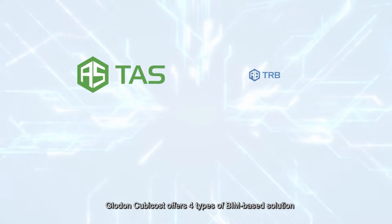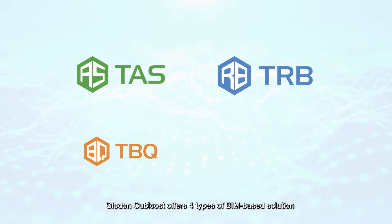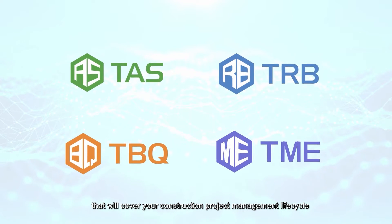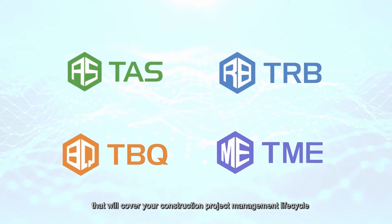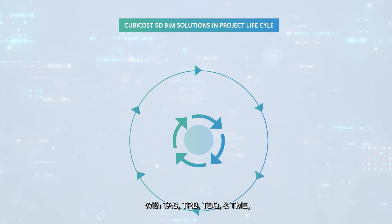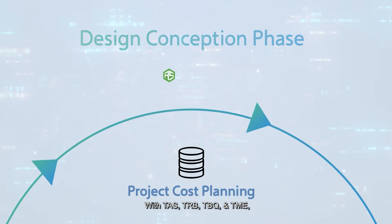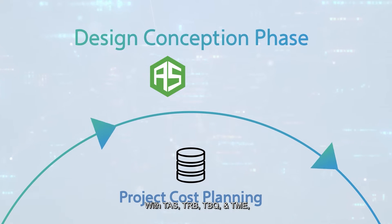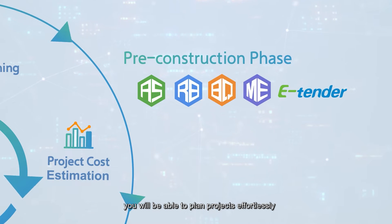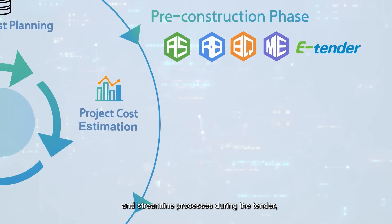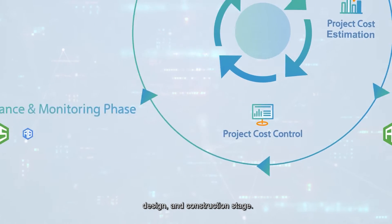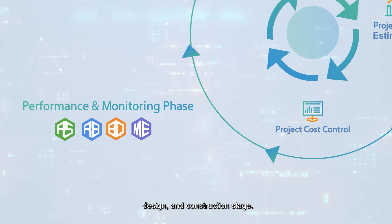Gloden QBiCos offers 4 types of BIM-based solutions that will cover your construction project management lifecycle. With TAS, TRB, TBQ, and TME, you will be able to plan projects effortlessly and streamline processes during the tender, design, and construction stage.